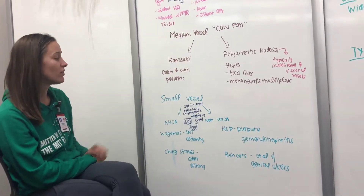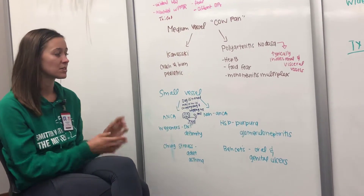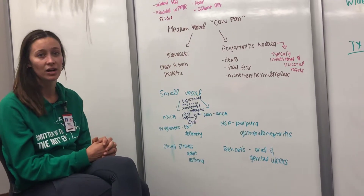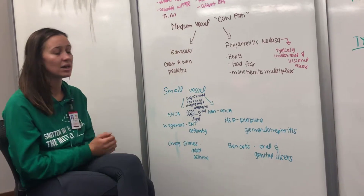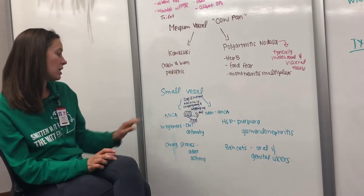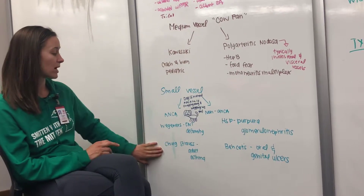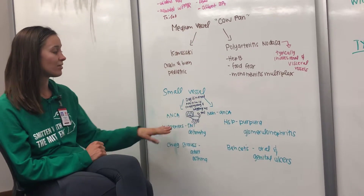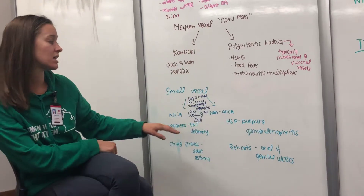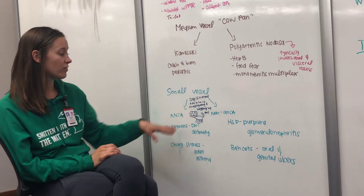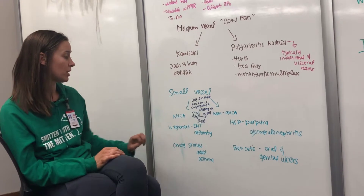With small vessel vasculitis, common clinical manifestations include glomerulonephritis, because the glomeruli are very small vessels. We divide small vessel vasculitis into ANCA-positive and non-ANCA — this refers to the serology marker. With Wegener's and Churg-Strauss, you'll see a positive ANCA marker. With HSP and Behçet's, you'll see a negative, or non-ANCA, marker. We'll go through a couple of these today.